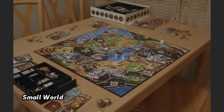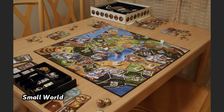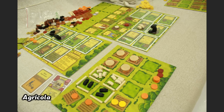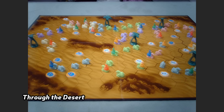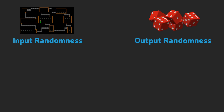Not all randomness in games is the same. For example, many strategy games have a kind of random start or random map generation, but are otherwise mostly or totally deterministic. For this kind of randomness, I use the expression input randomness — it's randomness that informs the player's decision. At the other end of the spectrum, we have randomness that decides the outcome of a decision. Most often, this is found in the form of dice rolls. I call this kind of randomness output randomness.